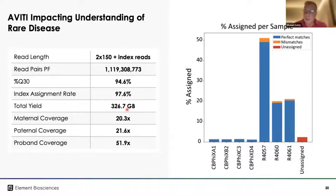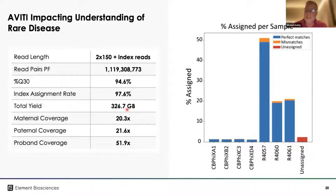At this read depth and gigabase yield we're able to generate 330x genomes per flow cell. The instrument is a two flow cell instrument, giving a high degree of flexibility. Turnaround time is approximately 44 hours whether you run one or two flow cells. With the paired-end 150 kit at a cost of $1,680 and 330x genomes per flow cell, you're at less than $600 per genome in sequencing costs.